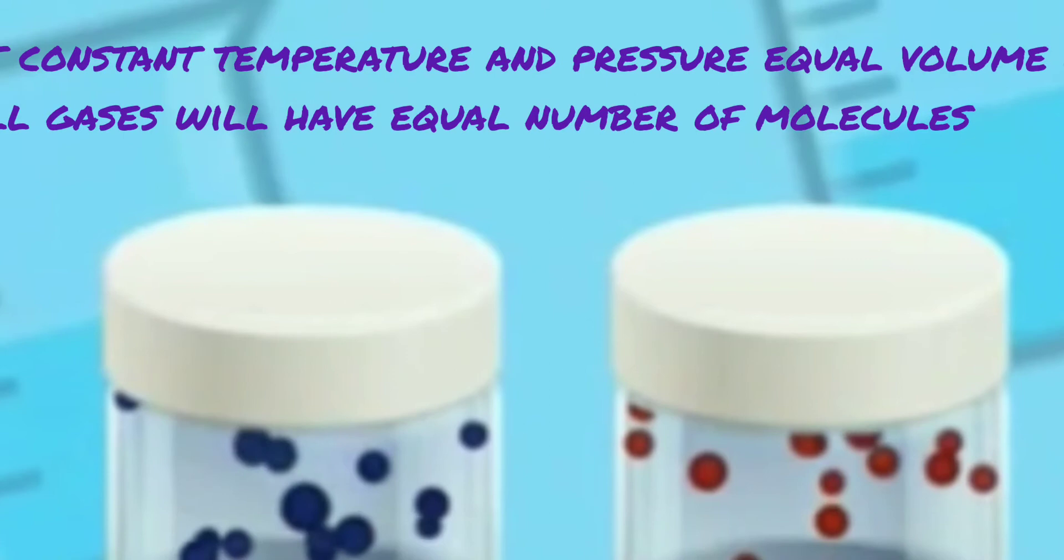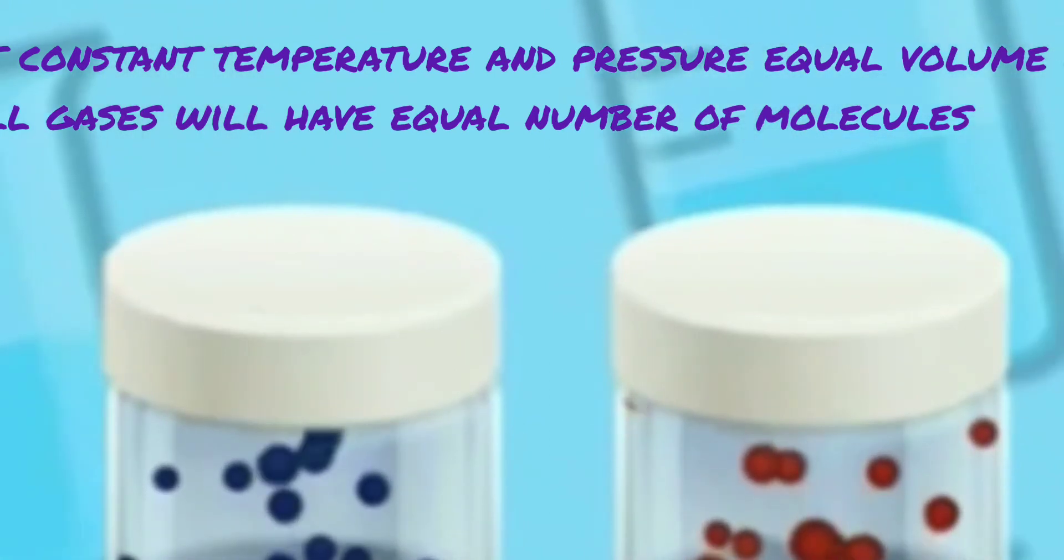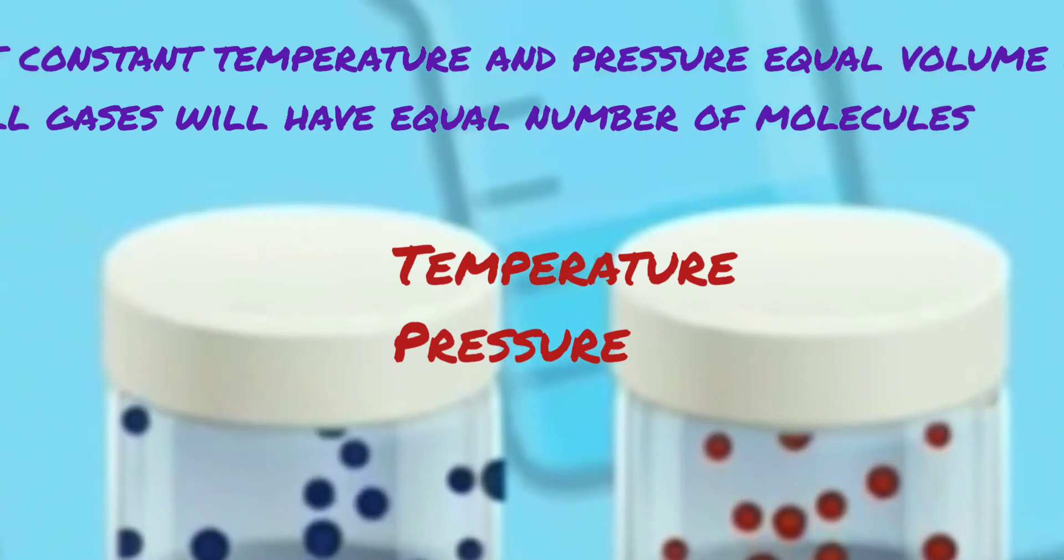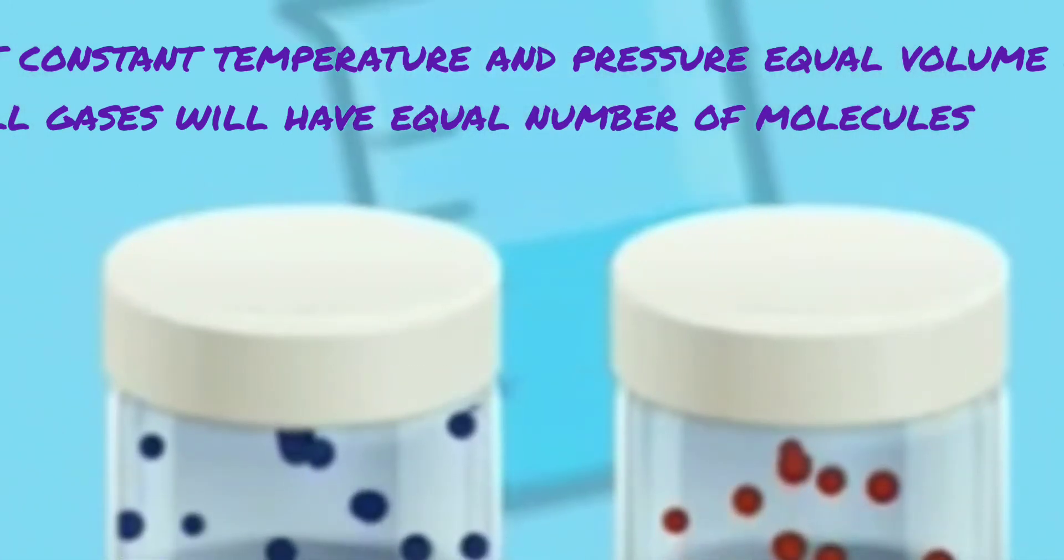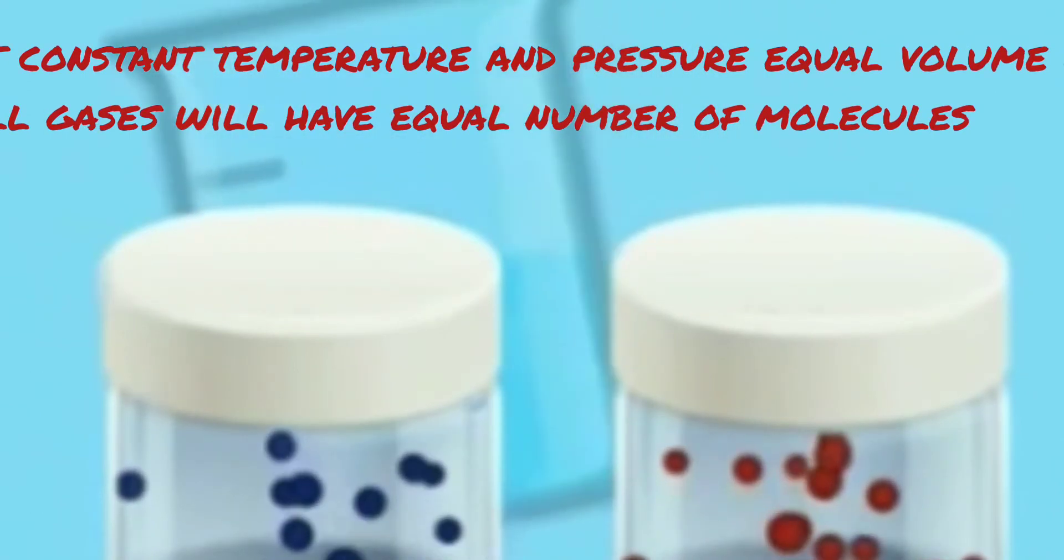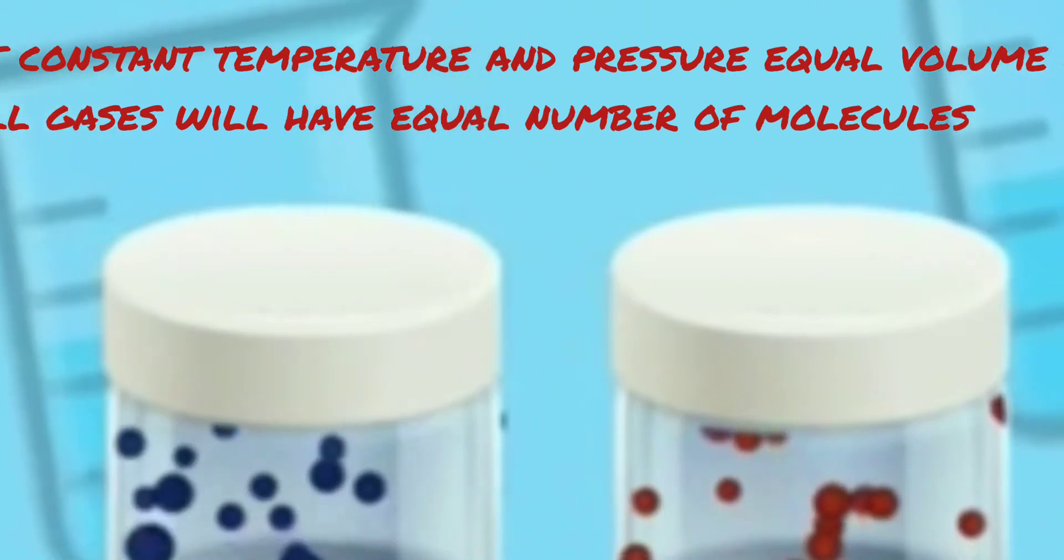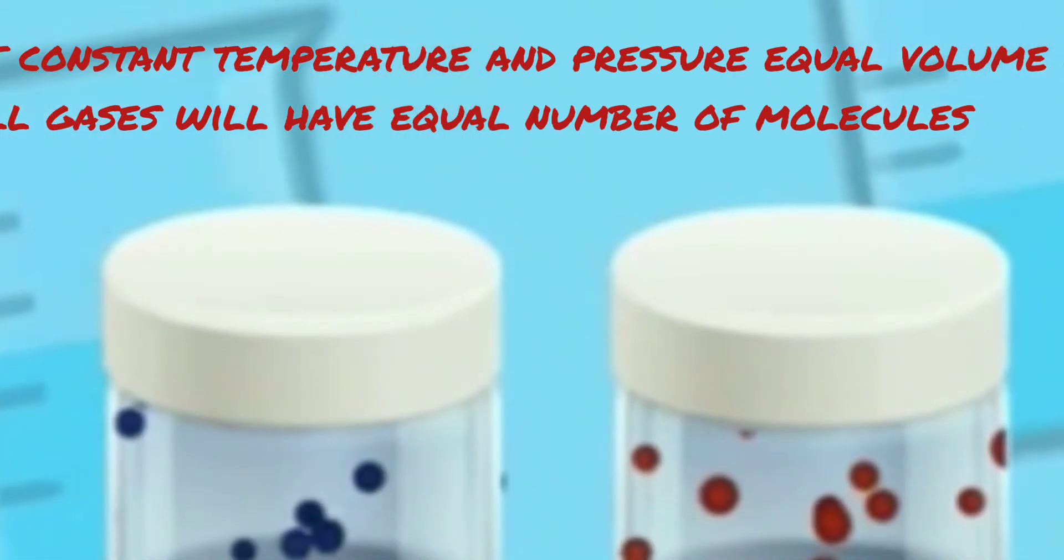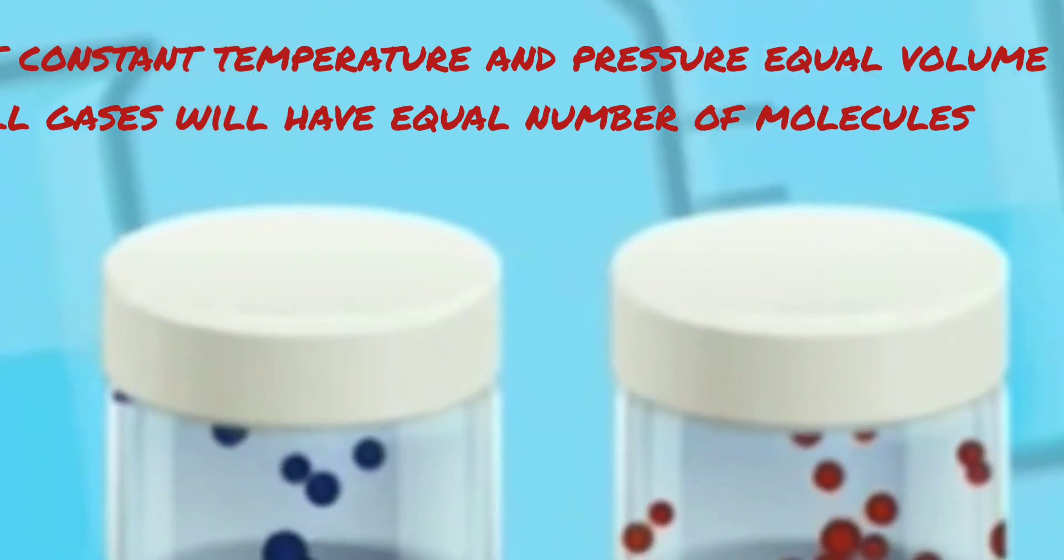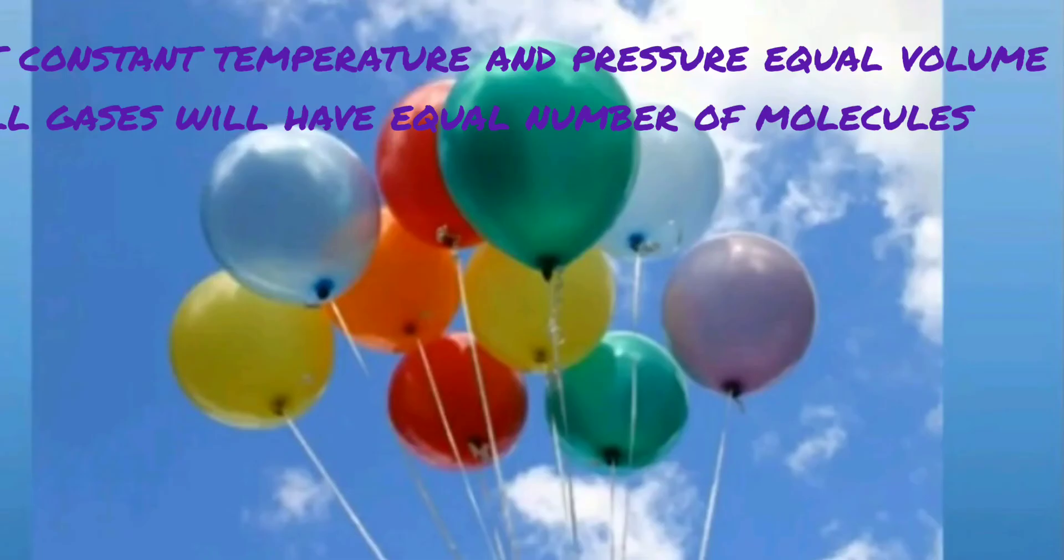You can see now a bottle containing oxygen, another one containing hydrogen. Both of them are at the same volume at constant temperature and pressure. What would be the number of molecules in them? This was what stated by Avogadro. He said at constant temperature and pressure, equal volume of all gases will have equal number of molecules.